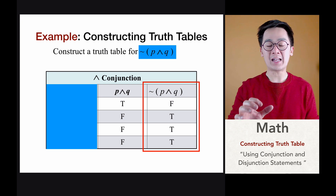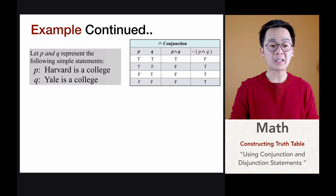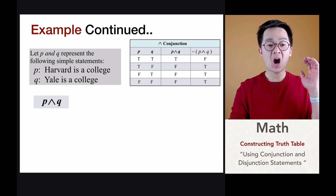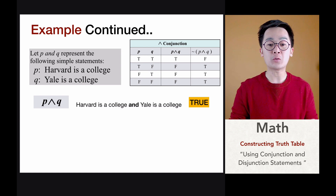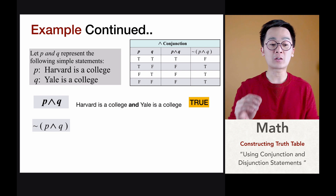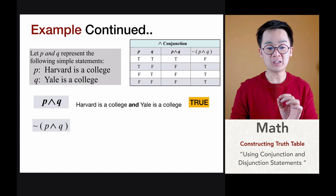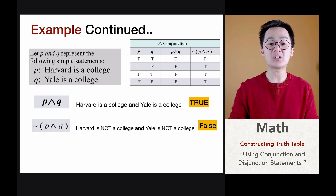To make sense of this statement with actual examples, let's say p is 'Harvard is a college' and q is 'Yale is a college.' Translating the symbolic form into English, p and q is simply 'Harvard is a college and Yale is a college,' which is a true statement. For the fourth column, not(p and q) means we negate both p and q, giving us 'Harvard is not a college and Yale is not a college,' which is a false statement according to our truth table.